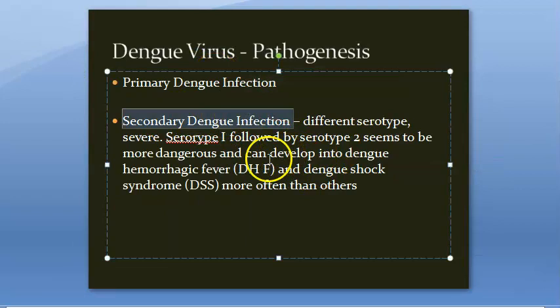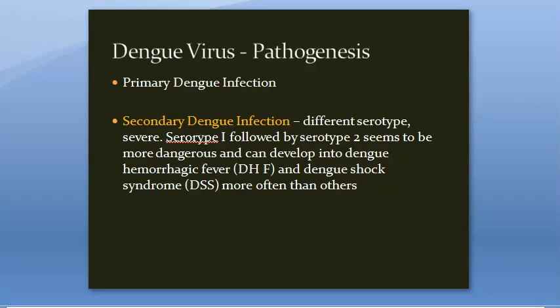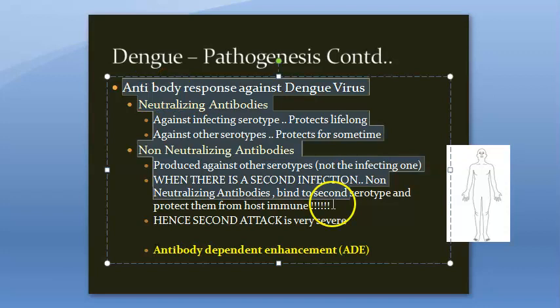Dengue fever is endemic in more than 100 countries, including India. In the pathogenesis, there is primary dengue infection and secondary dengue infection. Secondary dengue infection is more dangerous, especially if serotype 1 comes first and then serotype 2 infects the person, because serotype 2 is very dangerous.